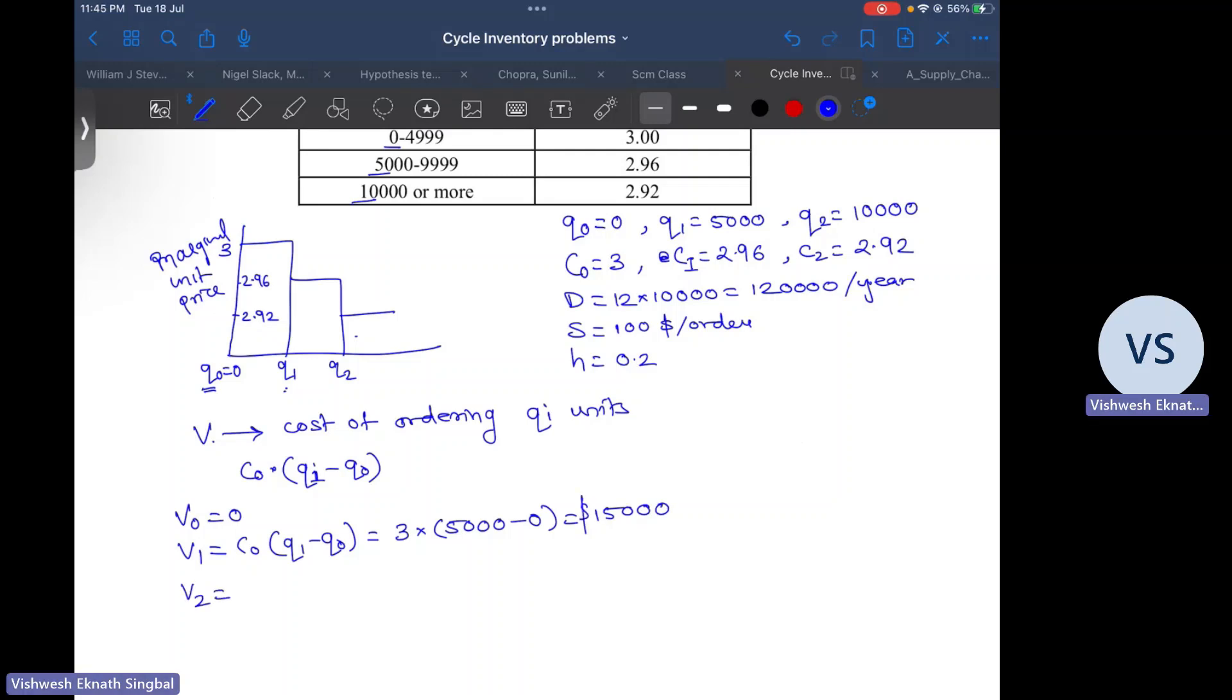Likewise, v2 will be - we add to v1, that is c0 into q1 minus q0 plus c1 into q2 minus q1. So what it does is it accounts for all the previous slabs. If we want to order something in this, then v2 will account for everything that is here. So what will be the value? 3 into 5000 minus 0 plus 2.96 into q2, which will be 10,000 minus 5000. So if you calculate this, your value for v2 should be $29,800.